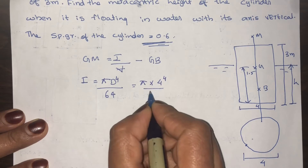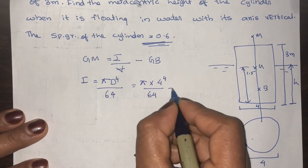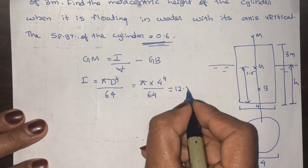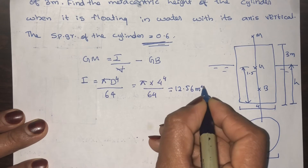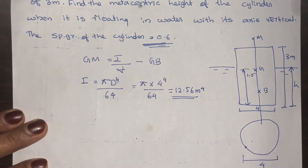Using the formula, I is equal to π times d to the power 4 divided by 64, which gives us 12.56 m⁴.